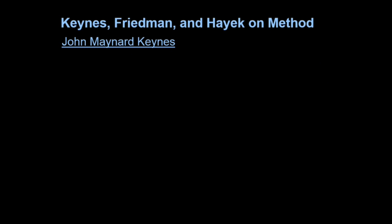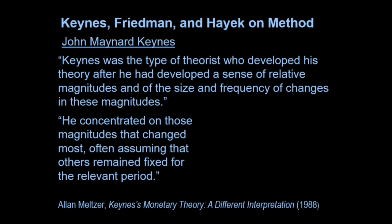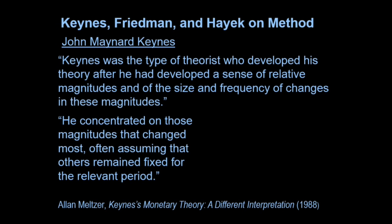This is from a 1988 book by Alan Melcher, who himself is a monetarist. He says Keynes was a type of theorist who developed his theory after he had developed a sense of relative magnitudes and the size and frequency of changes in these magnitudes. He looked at what was moving around — income's moving around, consumption's moving around, investment really moving around, it's flopping around. He concentrated on those magnitudes that change most, assuming that the others remain fixed for the relevant period. Keynesian theory is essentially a theory of things that flop around a lot.